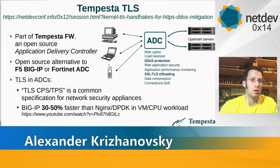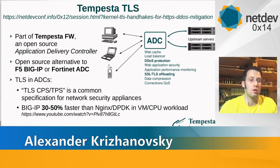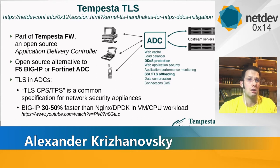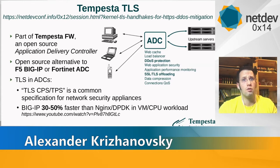TLS handshakes are a very important measurement in technical specifications of appliances — for example, how many TLS connections per second you can establish, or how many HTTPS transactions per second you can make. There's also a good video from F5 where a guy compared performance of BigIP and NGINX on top of DPDK, using a user-space CPU IP stack inside a virtual machine. In that measurement BigIP wins by about 50% transactions per second, because BigIP uses their own TLS implementation. So TLS is very crucial for us.